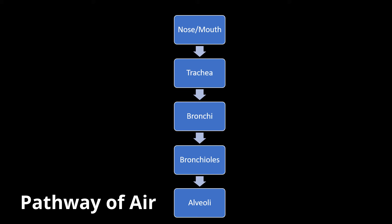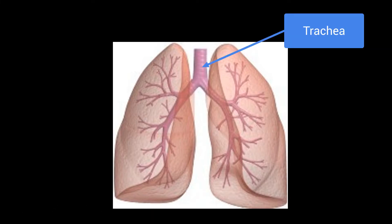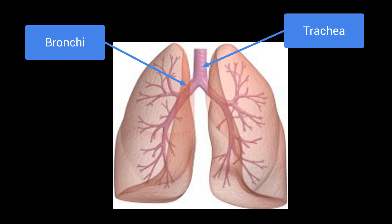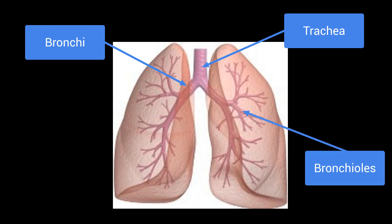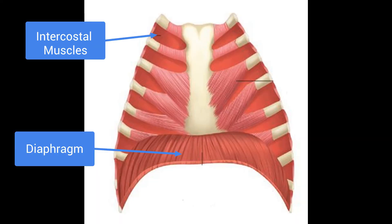The five key parts of this pathway are the mouth and nose, the trachea, the bronchi, the bronchioles, and the alveoli. We breathe in air through our nose or mouth, and this travels through the trachea, also known as the windpipe. From here, the trachea splits into two branches leading to each lung — these branches are known as bronchi. The bronchi then split into smaller branches known as bronchioles. At the end of the bronchioles we can find the alveoli, which are millions of tiny air sacs.